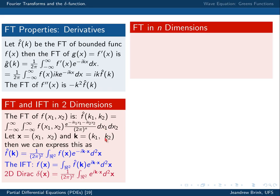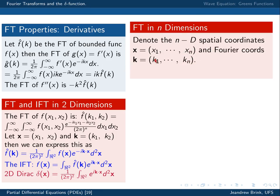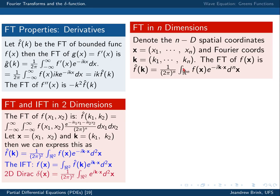In n dimensions, denote the spatial coordinates by x with variables x1 to xn, and the Fourier coordinates by k with components k1 to kn. The Fourier transform of f(x) is 1 over (2π)^n — adding a factor of 1 over 2π for each coordinate — times the integral over the full n-dimensional real space of f(x) e to the minus ik·x, where k·x equals x1k1 plus x2k2 plus ... plus xnkn, multiplied by the generalized volume element.